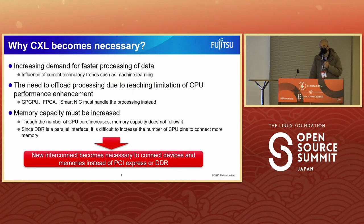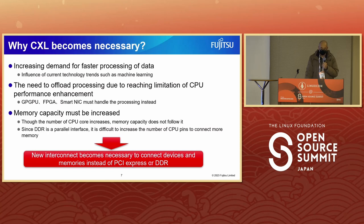Why did CXL become necessary? The first reason is increasing demand for fast processing of data, influenced by trends such as machine learning. The second reason is the need to offload processing due to reaching the limitation of CPU performance enhancement — GPGPU, FPGA, or SmartNIC must handle the processing instead. Finally, memory capacity must be increased. Though the number of CPU cores increases, memory capacity does not follow. Since DDR is a parallel interface, it's difficult to increase CPU pins to connect more memory, so a new interconnect becomes necessary.